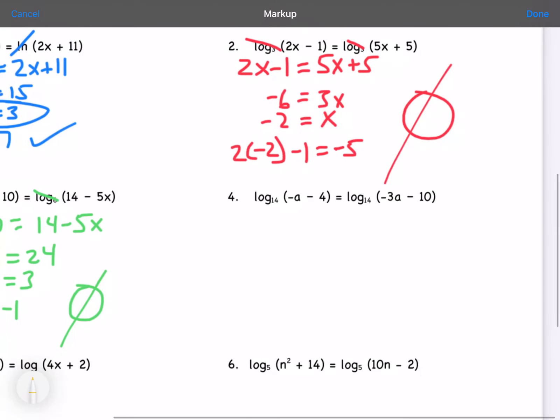My next one, log base 14 of negative a minus 4 equals log base 14 of negative 3a minus 10. So we can get rid of the log base 14s, set negative a minus 4 equal to negative 3a minus 10.